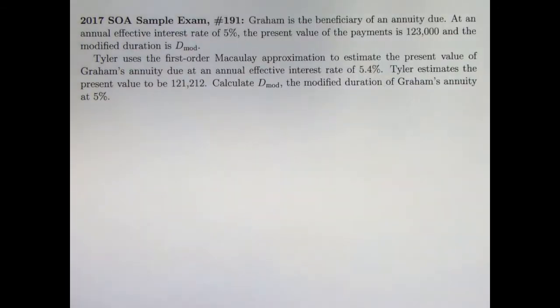Here is the problem. Graham is the beneficiary of an annuity due. It doesn't really matter that it's an annuity due. All we need to know are the interest rates and the present values and we want to find a duration here. We need that first-order Macaulay approximation.